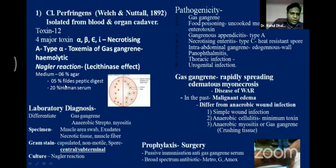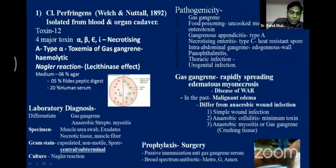In the Nagler reaction, take a plate where half is incorporated with antitoxin to alpha toxin and half without antitoxin. When colonies grow, there is no clear zone on the antitoxin side — because the antitoxin neutralizes the alpha toxin released. On the side without antitoxin, alpha toxin is released into the medium forming a clear zone around the colony. This is called a Nagler reaction positive.